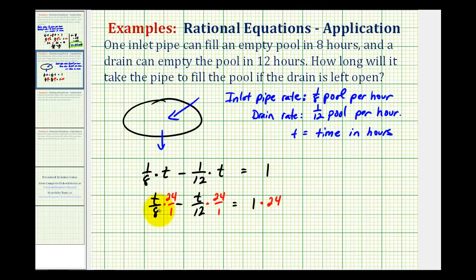Now let's simplify. There's one eight in eight and three eights in twenty-four. So this simplifies to three t minus, there's one twelve in twelve and two twelves in twenty-four, so we have minus two t equals twenty-four. This works out really nicely, three t minus two t is equal to t. So we have t equals twenty-four.